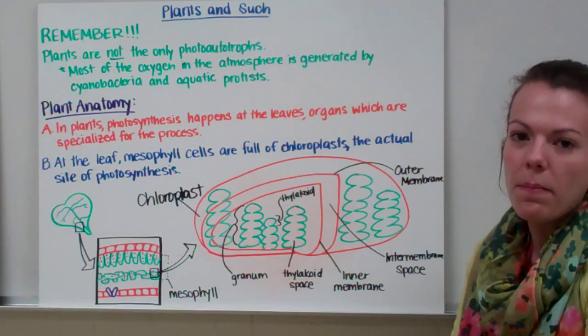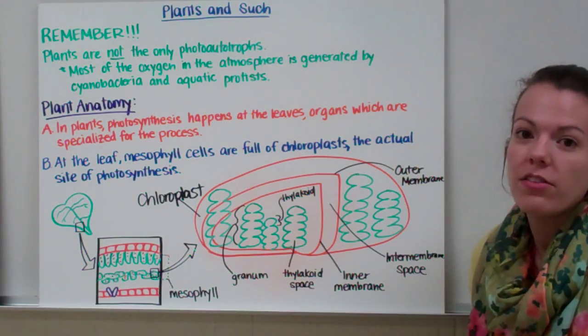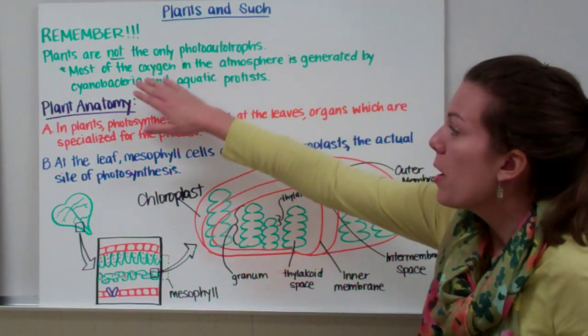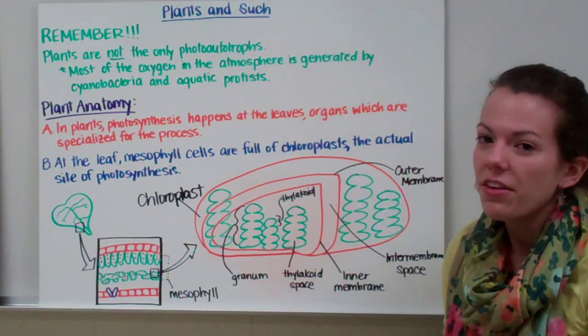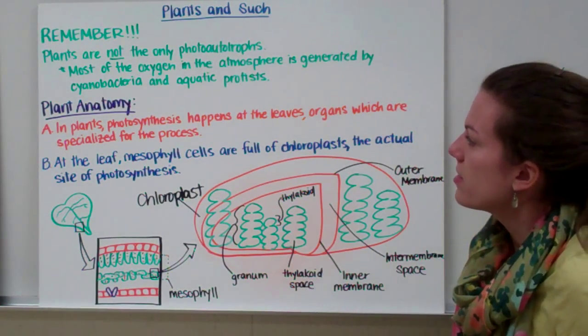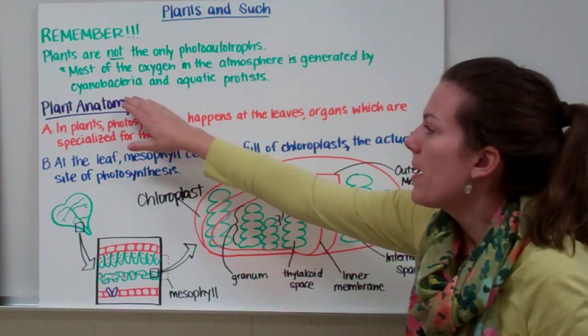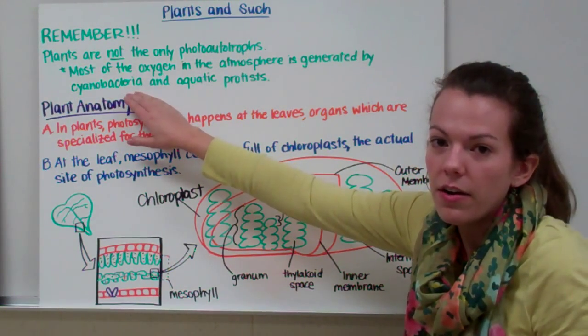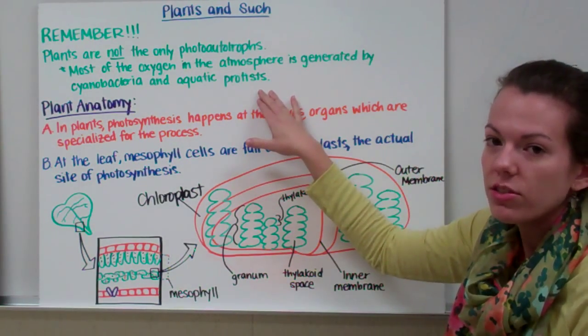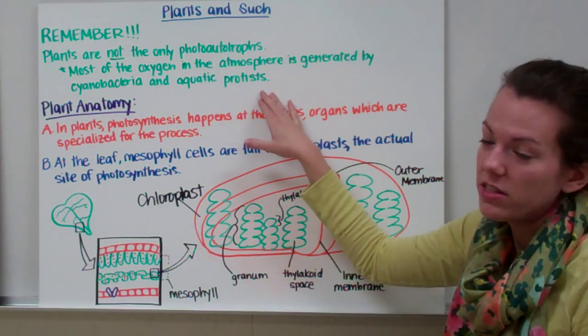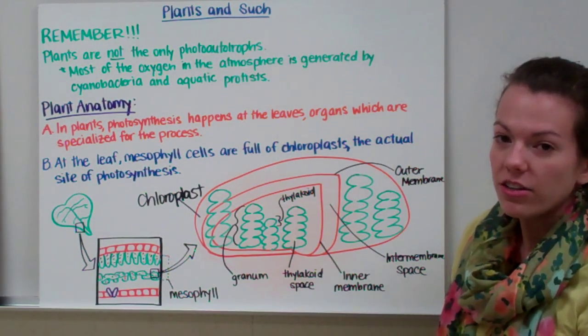Now let's talk a little bit about plants, because plants are one example of an organism that do photosynthesis. Remember, plants are not the only photoautotrophs. Most of the oxygen in the atmosphere is actually generated by cyanobacteria, which are photosynthetic bacteria, and aquatic protists like algae. So plants really don't do most of the photosynthesis on Earth. But they are one example of photosynthetic autotrophs.